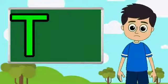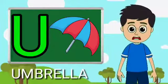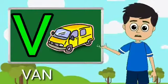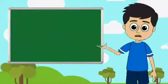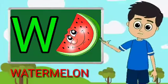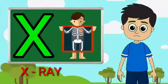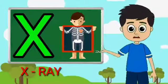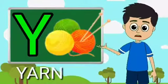U for umbrella, V for van, W for watermelon, X for extra, Y for yarn.